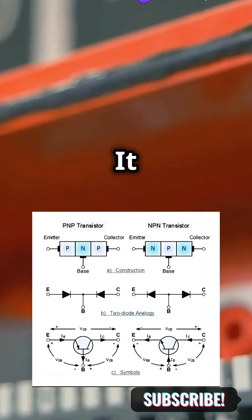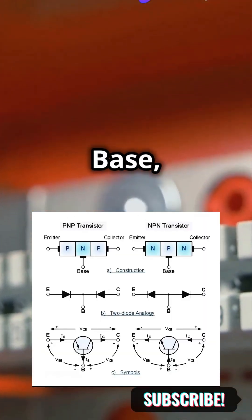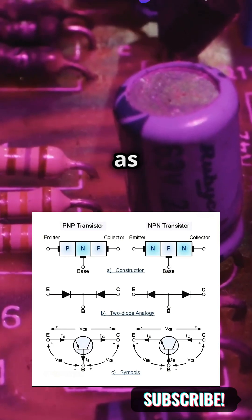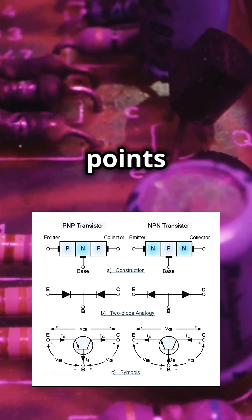Let's break down a BJT. It has three terminals: the emitter, base, and collector. Picture them as the entry, control, and exit points for the electric current.